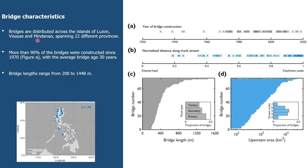The 74 selected bridges span 22 different provinces in the Philippines. More than 90% were constructed since 1970, so quite a lot were built relatively recently. Most bridges are positioned towards the catchment outlet rather than the headwaters, which is a product of the road network especially around Luzon Island. Bridge lengths range from 200 meters to almost 1,500 meters.